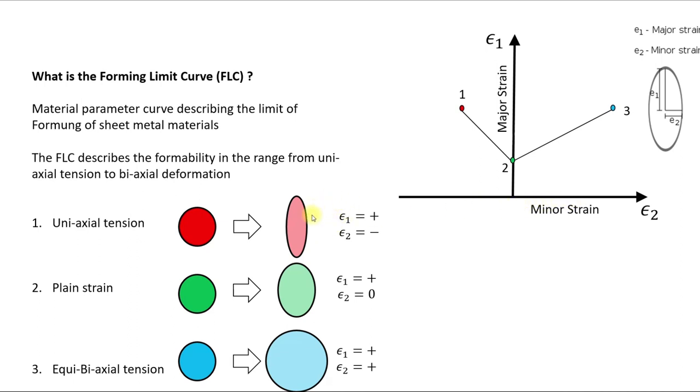So you can see here for Uniaxial Tension we have the Major Principle Strain is positive, and the Minor Principle Strain is negative, so compression basically. And in the Plane Strain configuration we have the Major Principle Strain but the Minor Principle Strain is zero. And in the Equi-Biaxial Tension state we have the Minor and Major Principle Strain.